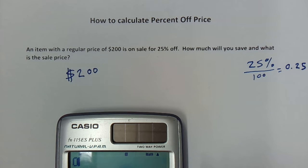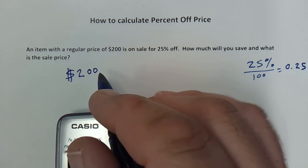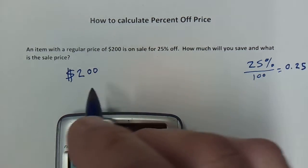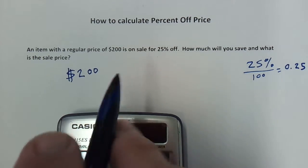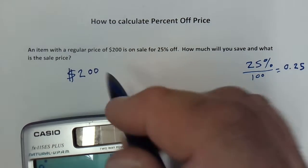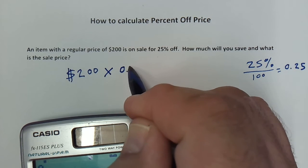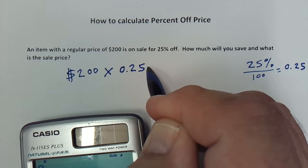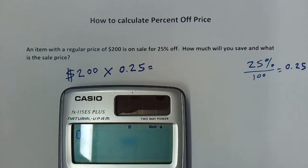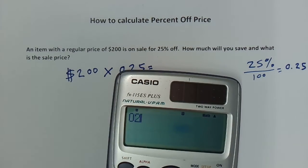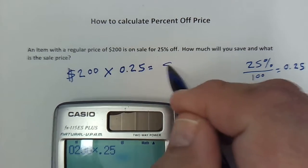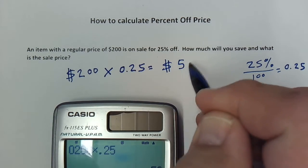So if we have $200 and we want to take 25% off, I need to find out how much 25% of $200 is. I'm going to take the $200 and multiply it by 0.25, which is our 25% as a decimal. If you put that in your calculator — 200 times 0.25 — that gives us $50, so it is $50 off.